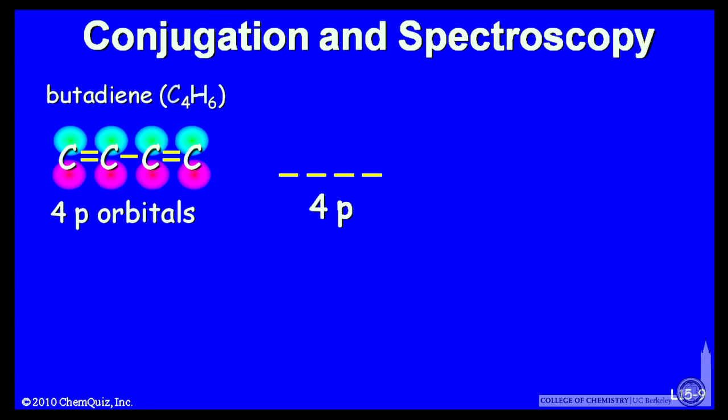So here's butadiene, C4H6. It has sp2 hybridized carbons and 4 p orbitals, one on each carbon.